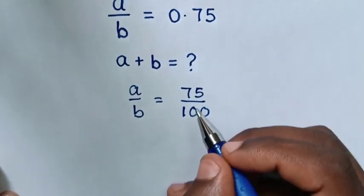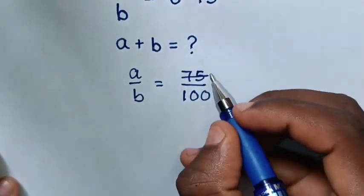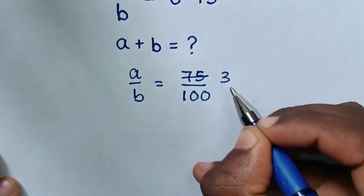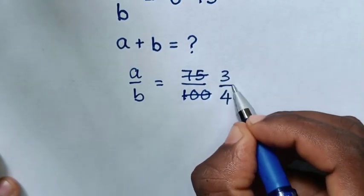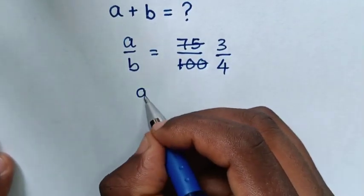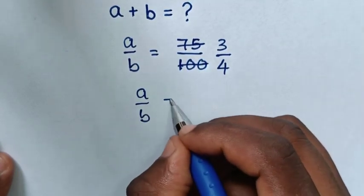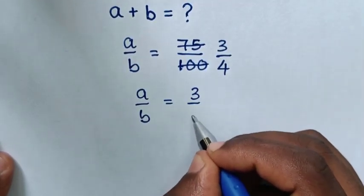Then, to simplify, 75 divided by 25 is 3, and 100 divided by 25 is 4. So our equation will be A over B is equal to 3 over 4.